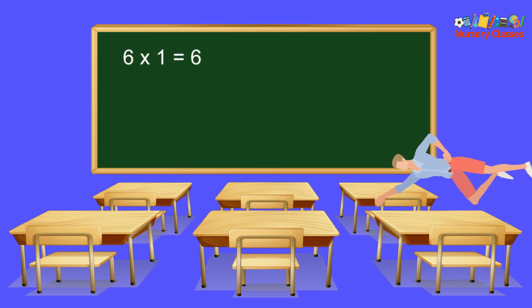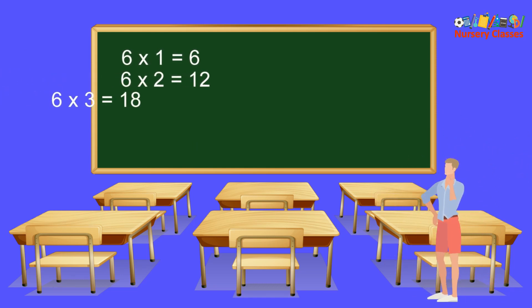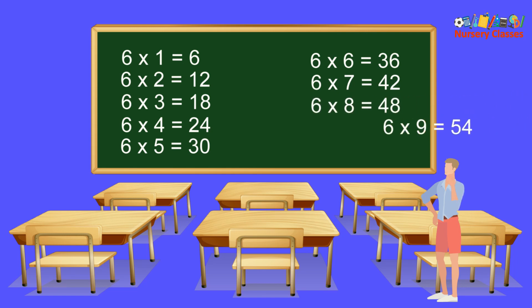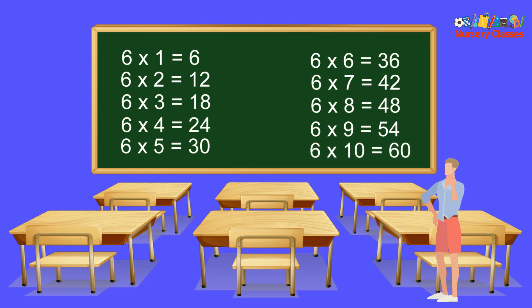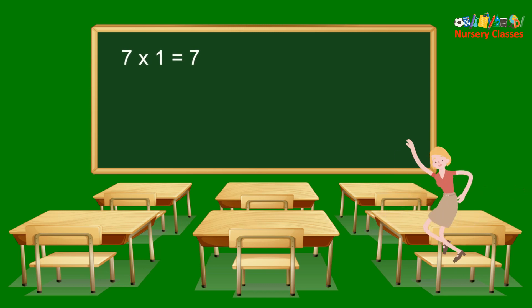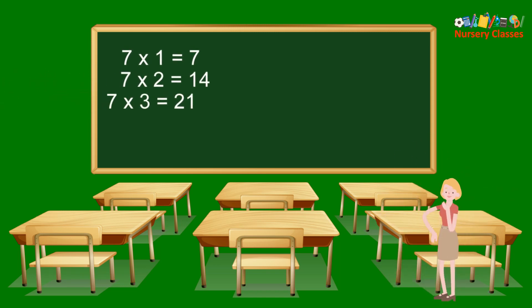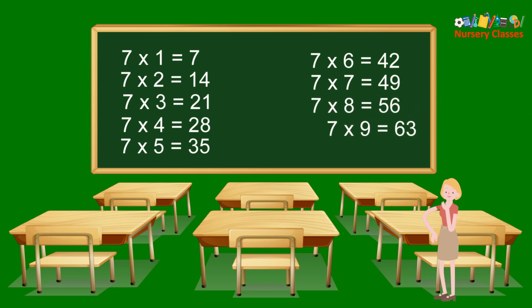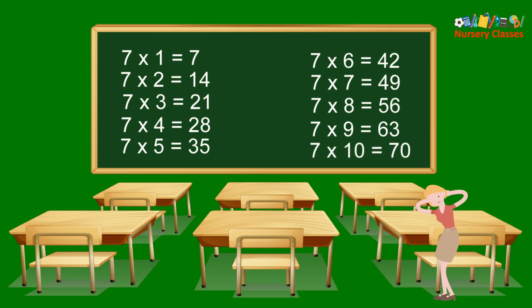6×1 equals 6, 6×2 equals 12, 6×3 equals 18, 6×4 equals 24, 6×5 equals 30, 6×6 equals 36, 6×7 equals 42, 6×8 equals 48, 6×9 equals 54, 6×10 equals 60. 7×1 equals 7, 7×2 equals 14, 7×3 equals 21, 7×4 equals 28, 7×5 equals 35, 7×6 equals 42, 7×7 equals 49, 7×8 equals 56, 7×9 equals 63, 7×10 equals 70.